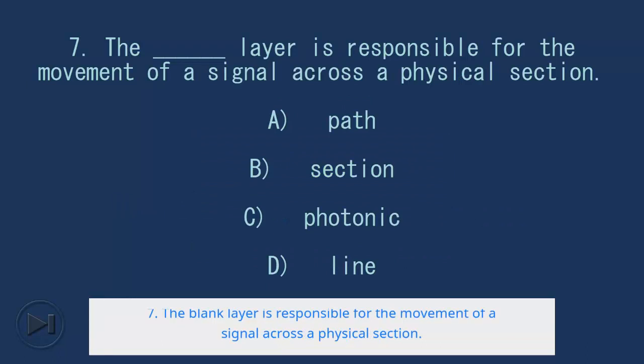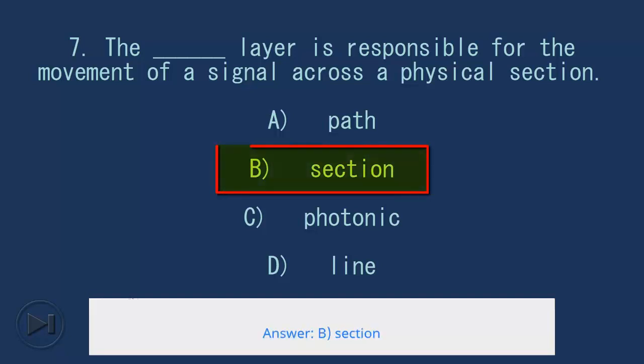7. The blank layer is responsible for the movement of a signal across a physical section. A. Path, B. Section, C. Photonic, D. Line. Answer: B. Section.